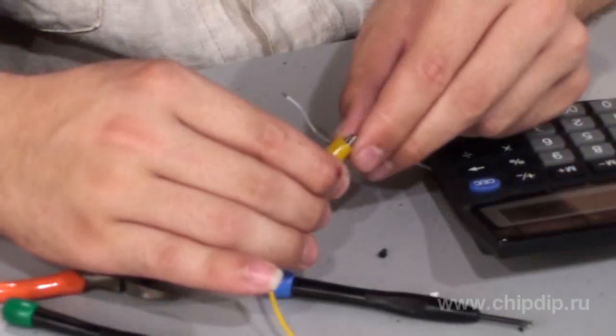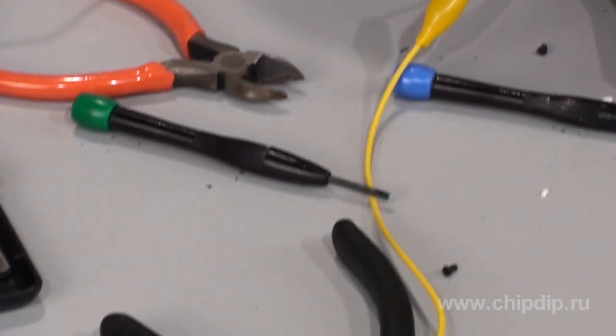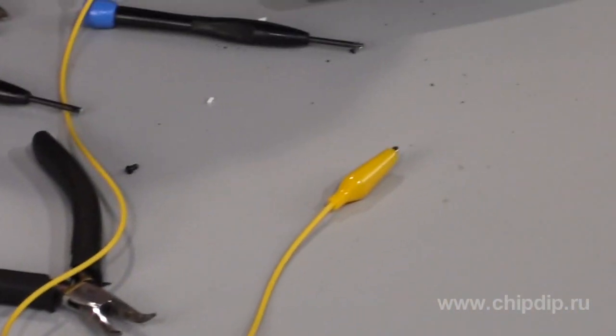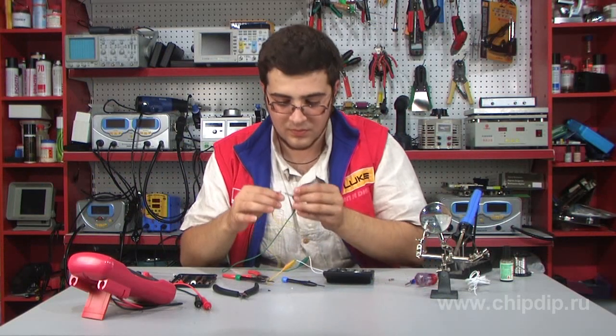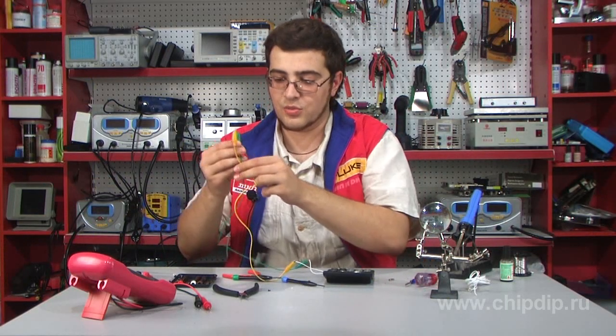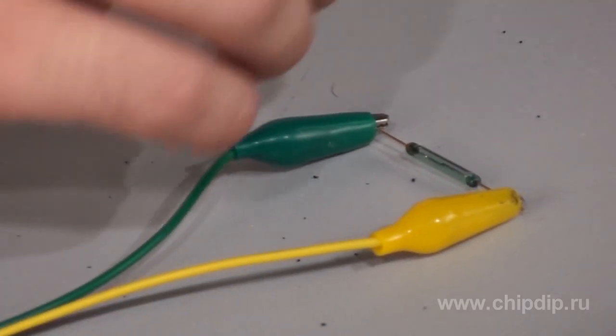With the help of alligator clips, we attach the reed relay to the wires. Now we can check how the counter works. But first we need to program it.